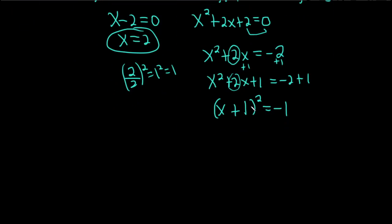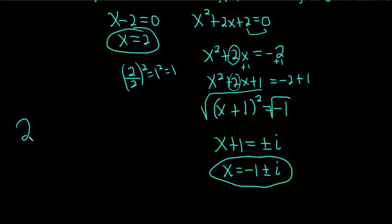And this is equal to negative 1. To get rid of the 2 here, we'll just take the square root. Whenever you take the square root of a variable term squared, you always get a plus or minus. So this is x plus 1 equals plus or minus i. Then subtract 1, so you get negative 1 plus or minus i. So now we have all of the answers: we have 2, negative 1 plus i, negative 1 minus i.